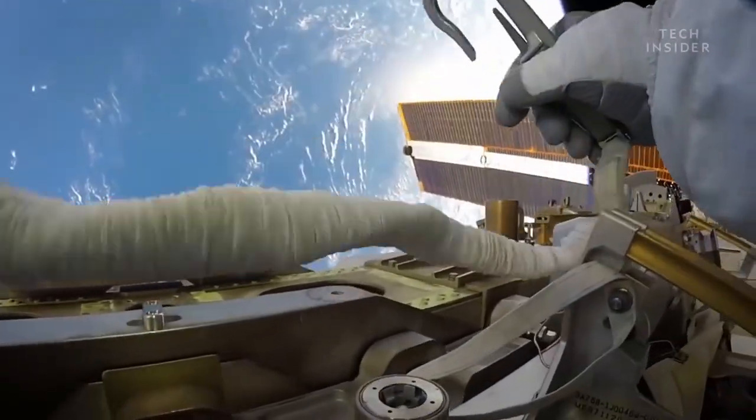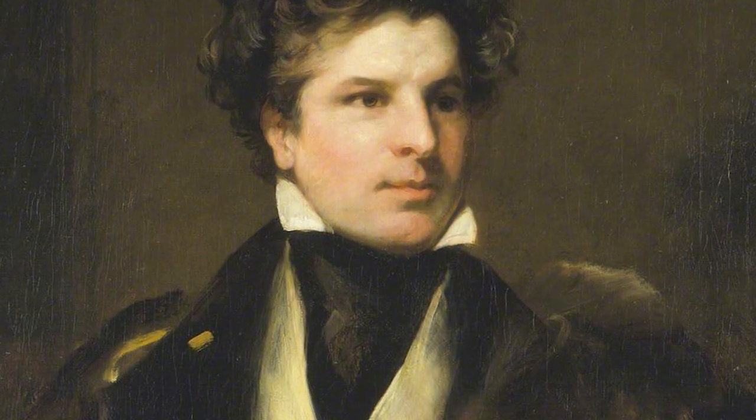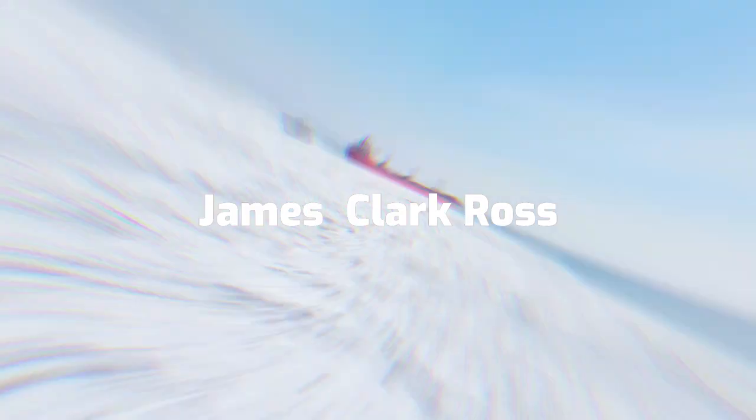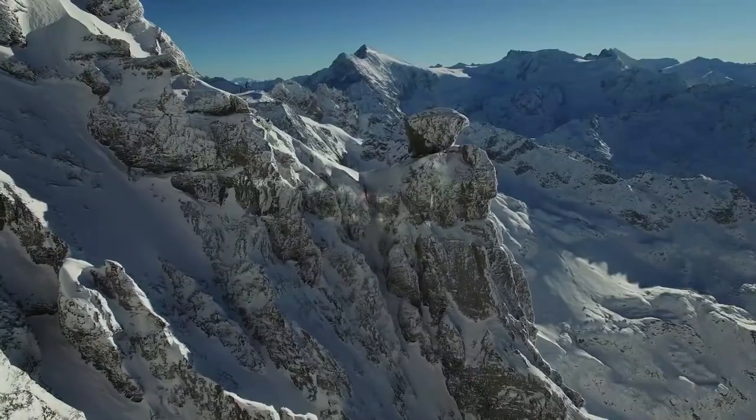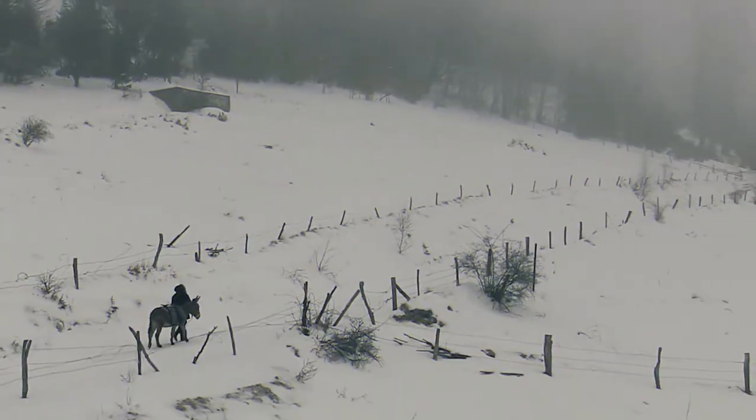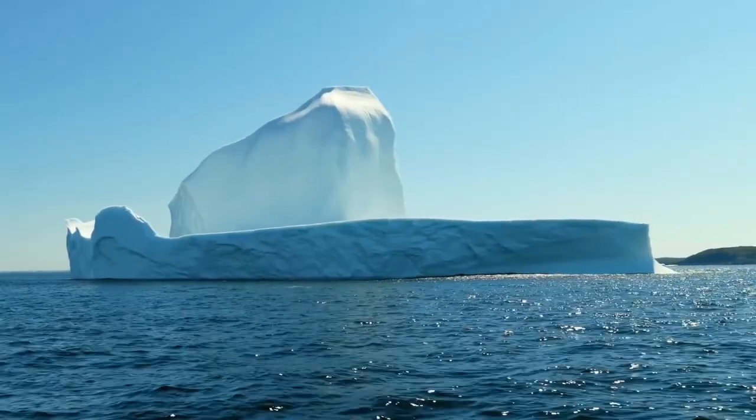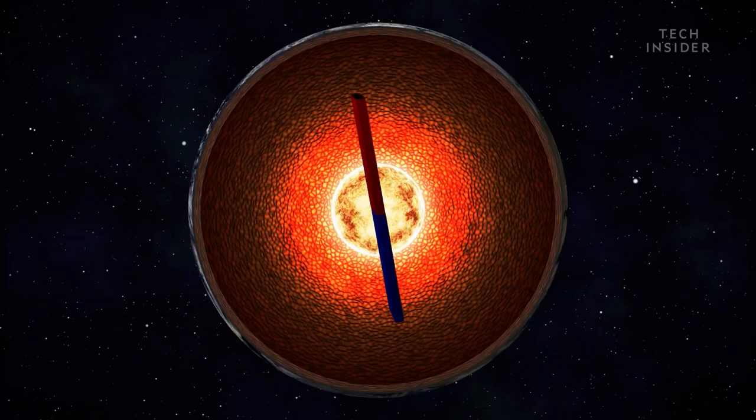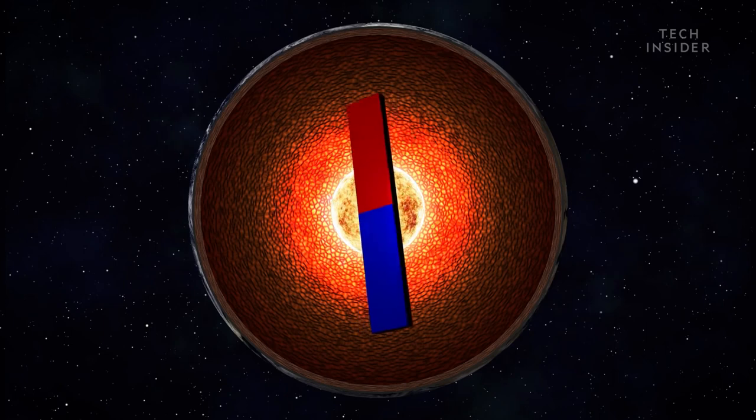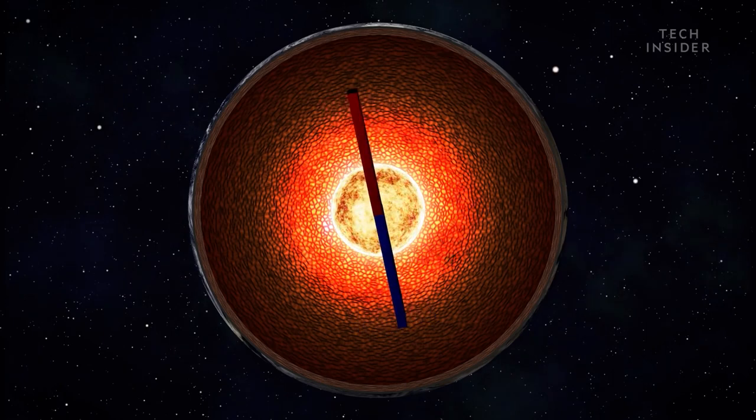The magnetic north pole is no longer where it once was. Since 1831, when British polar explorer James Clark Ross discovered it on the Boothia Peninsula in Canada's Nunavut territory, scientists have been meticulously measuring its location. However, our north pole has been creeping closer to Siberia at an alarming rate in recent years.